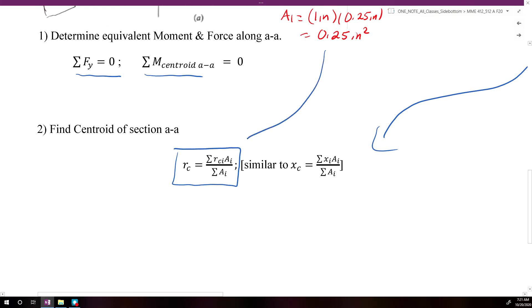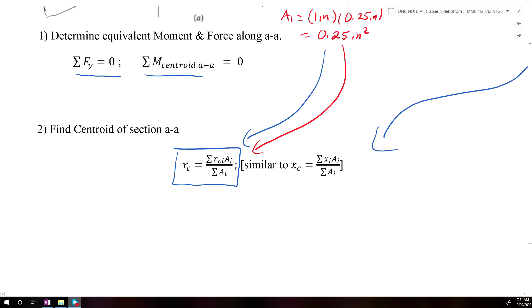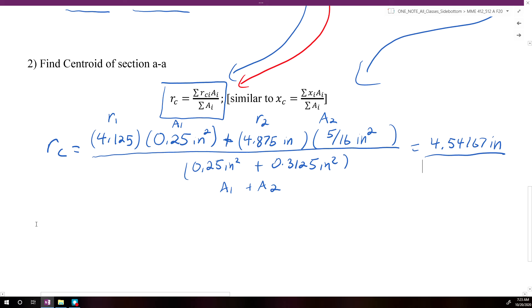So we're just plugging in all of our values for A1 and A2 into this equation to solve for RC. So if we do that real quick, we're going to stop the video just to write down all the math real neat. Alright, so after you plugged in all the terms, you should have ended up with a value for the radius to the centroid of our cross section as being equal to 4.54167 inches.